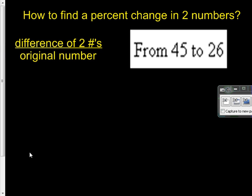So how do you find the percent of change between two numbers? Basically, if we use this formula, we find the difference of the two numbers and then divide it by the original number. That'll get us the answer every single time.